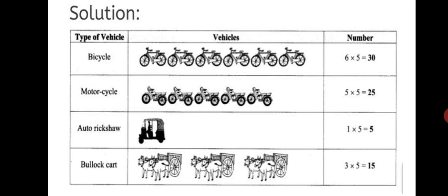Same way motorcycle, count how many? 1, 2, 3, 4, 5. And again multiply by 5, you get answer 25. Next auto rickshaw, just 1. So, 1 into 5, 5. Bullock carts, 3 into 5, 15. So, this way you know how to read a pictorial data or a pictogram.